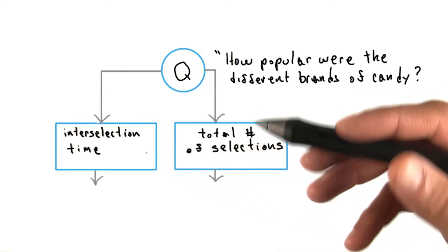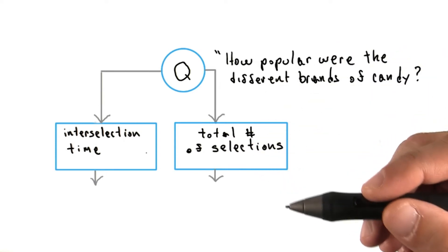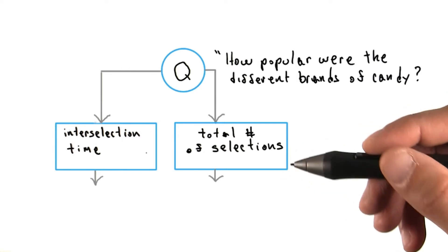Now that we have a metric, interselection time, that we feel captures what we're interested in, we must use it to cast the above question as a problem of statistical inference.